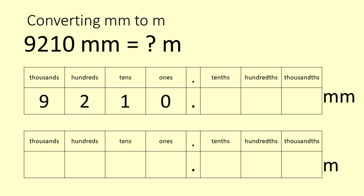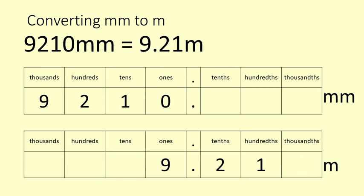We will convert 9210 millimetres into metres here. So we have 9210. We're going to divide by 10, divide by 100, divide by 1000. So we've ended up with 9.210. Now we don't usually put the zero on the end, so it's just going to be 9.21 metres.